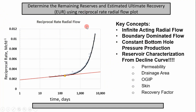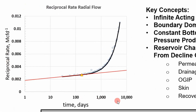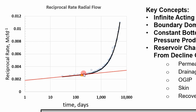In part one, we're going to determine the remaining reserves and estimated ultimate recovery using a reciprocal rate radial flow plot. This plot looks different than your rate cume and rate time decline. On the y-axis you have reciprocal rate — which is one over rate, the inverse of rate. On the x-axis you have time. You basically fit a straight line to the beginning of your data.